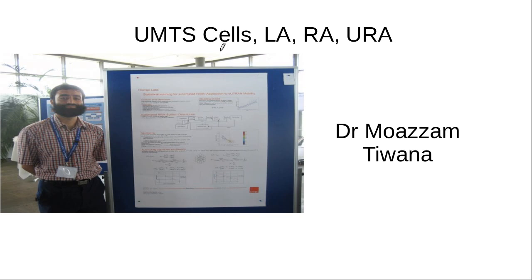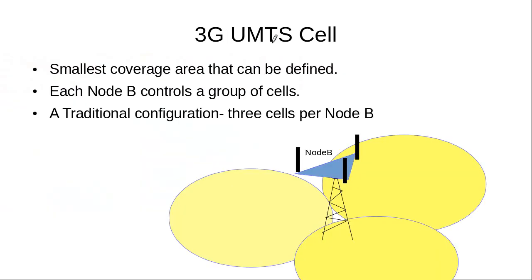Bismillahirrahmanirrahim. This is Dr. Mozzam Tiwana, and in today's class we are going to talk about the UMTS cells, location areas, routing areas, and the registration areas in UMTS. These entities are not only important in a 3G UMTS network from the perspective of network planning, but they are also very important when we talk about the mobility and mobility management of a user equipment or mobile in a 3G UMTS network.